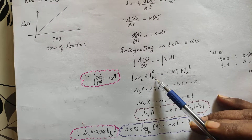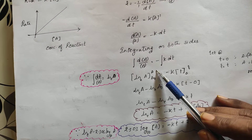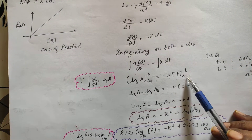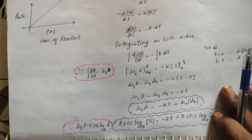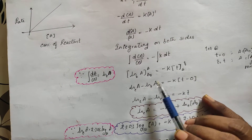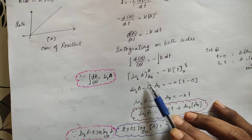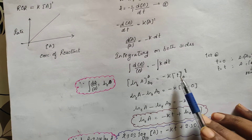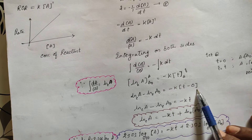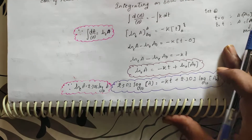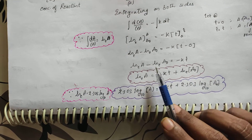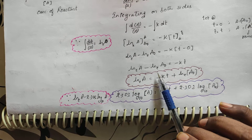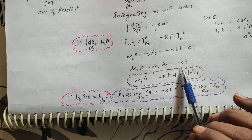Applying the limits from initial concentration to final concentration, and from initial time to time t, we get: ln[A] − ln[A₀] = −Kt. So it can be written as ln[A] = ln[A₀] − Kt.